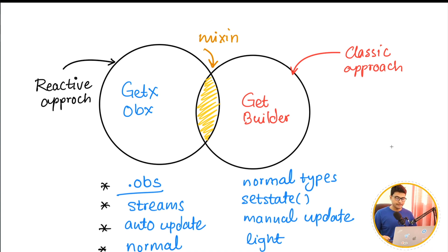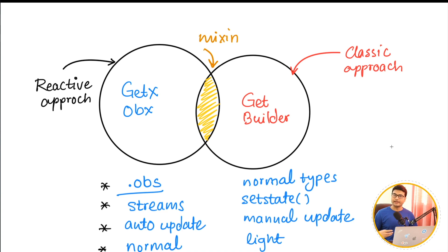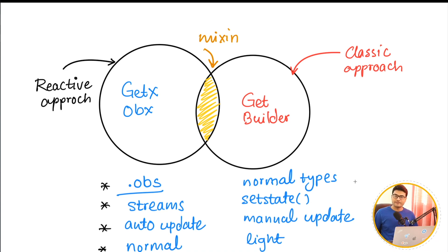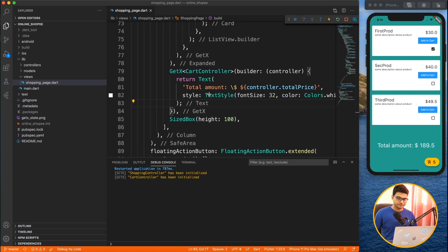GetBuilder works just like Flutter's setState but it happens behind the scenes, so you don't have to write setState yourself. GetX and Obx auto-update whenever there's a value change, whereas with GetBuilder you have to call the update method manually. GetX and Obx create streams so they use a little more RAM, but it's very minor. GetBuilder is very lightweight — it doesn't create any extra variables or streams. Choose based on your situation.